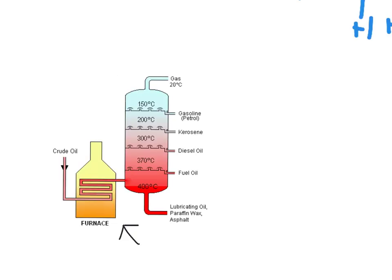As the vapors enter the fractionating column, they begin to rise. The further up the column they go, the cooler it is, and the vapors will start to condense.